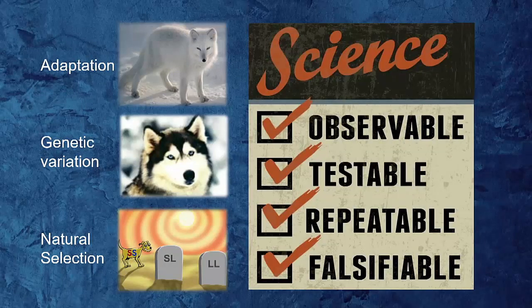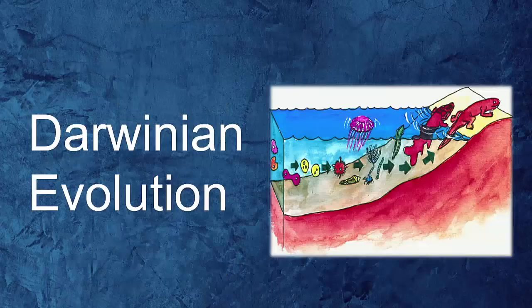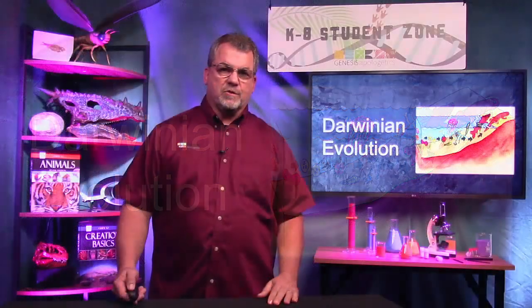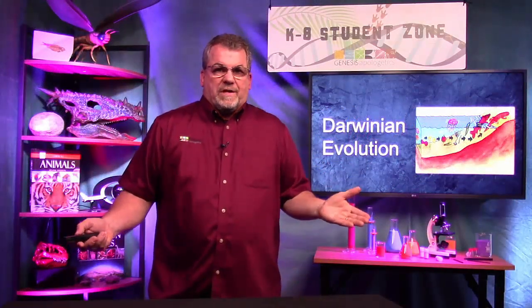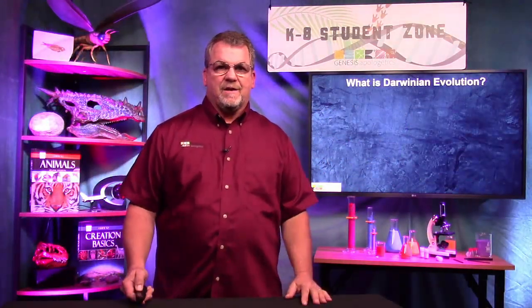What's really important to understand is that these processes have all been confirmed by observable science. Okay, ready for the last one? Darwinian evolution. Let's start with the definition — what is it?